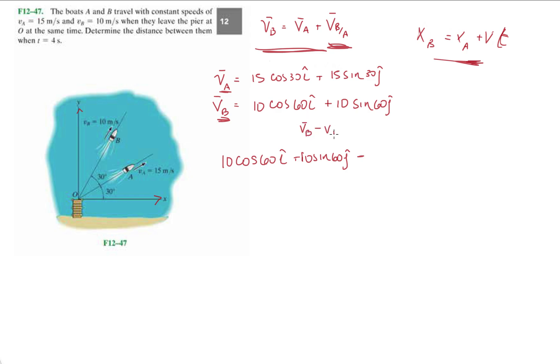10 cosine 60 i plus 10 sine 60 j, minus v_A. If we look at that equation, I'm doing v_B minus v_A is equal to v_B with respect to A. So minus 15 cosine 30 i plus 15 sine 30 j.